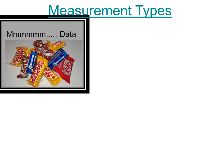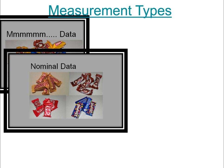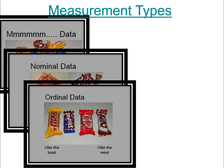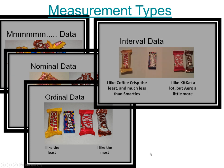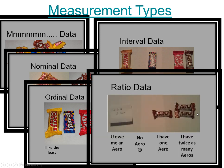To illustrate with a candy example: nominal data classifies the candies together. Ordinal data ranks them from least liked to most liked. Interval data goes further — I like Coffee Crisp the least, much less than Smarties, but I like KitKat a lot and Aero a little bit more, so those go close together. Ratio data assigns actual numbers — I have one Aero or twice as many Aeros, giving a number associated with each.